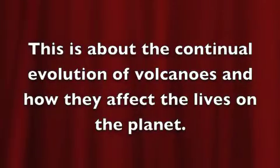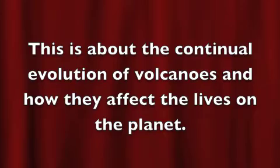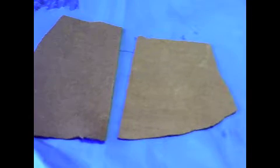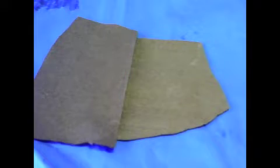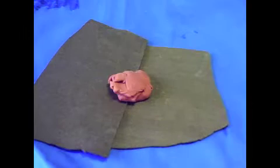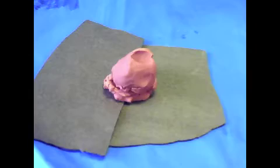This is about the continual evolution of volcanoes and how they affect lives on the planet. Volcanoes are formed in different ways. Most volcanoes are formed when two tectonic plates meet, which forces one plate to be subducted under the other.